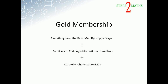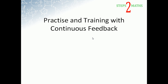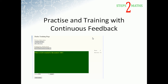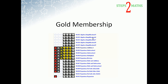So the two different types of membership are there: the basic membership if you just want to learn, and the goal membership which provides you with practice and training with continuous feedback. All the different topics have continuous feedback and training available. It provides you the information, you put your answer in, and it lets you know immediately. Once you've completed a particular section, your progress can be measured on the progress page, which allows you to see exactly how far you've progressed in any particular chapter.